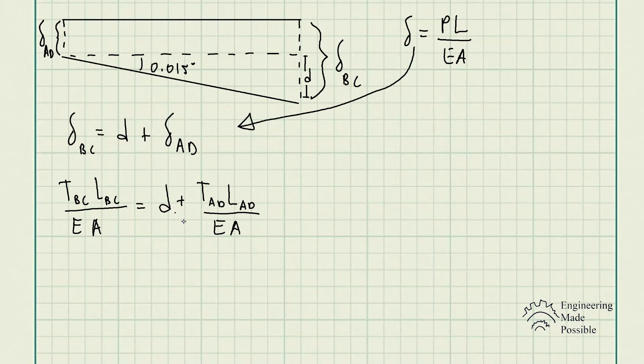This is where we replace the tensions in BC and the tension in AD with the two-thirds P and the one-third P that we originally calculated. So we have two-thirds P times the length divided by EA is equal to d plus one-third PL divided by EA.